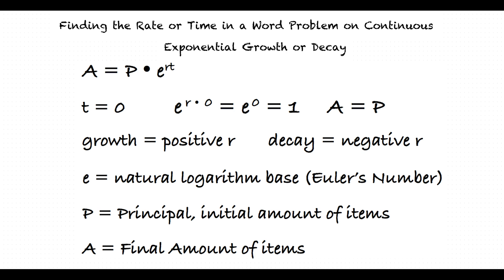Okay, I think I'm starting to understand. In a decay problem, A should be less than P, and in a growth problem, A should be greater than P. Can we do an example of continuous exponential growth?